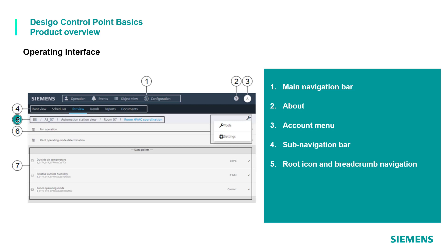Below the sub-navigation bar is the root icon, useful for returning to the root of the hierarchy, and breadcrumb navigation that helps the user navigate level by level. On the right is tools and settings, providing tools related to the selected sub-application and general settings for the whole system. Finally, the main work area is where the user basically operates.